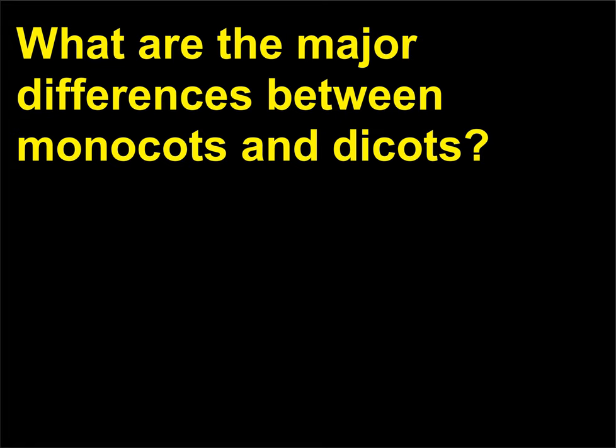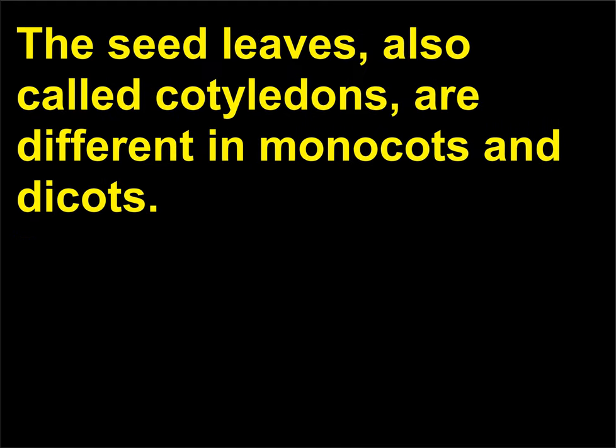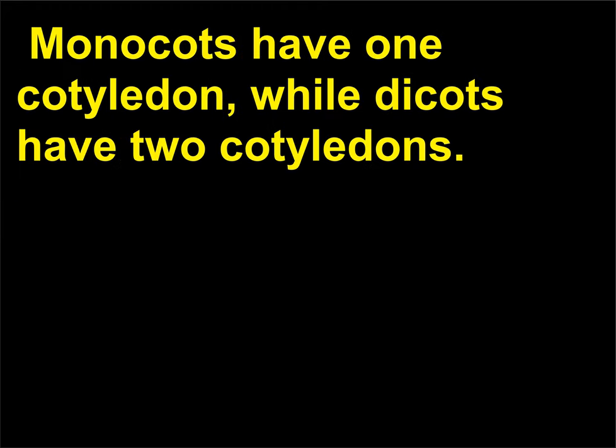What are the major differences between monocots and dicots? The seed leaves, also called cotyledons, are different in monocots and dicots. Monocots have one cotyledon, while dicots have two cotyledons.